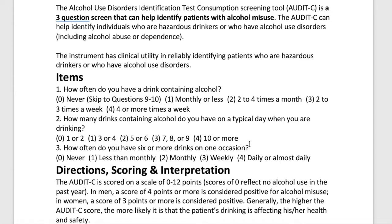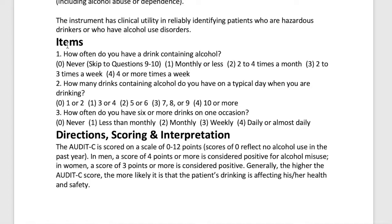Just like the CAGE, the AUDIT-C — the Alcohol Use Disorders Identification Test Consumption screening tool — is a three-question screening that can help identify patients with alcohol misuse disorder. The AUDIT-C can help identify individuals who are hazardous drinkers or who have had alcohol use disorders, including alcohol abuse or dependence. It is similar to the CAGE in that it is a preliminary screening, but it is shorter at only three questions and is not a yes or no questionnaire.